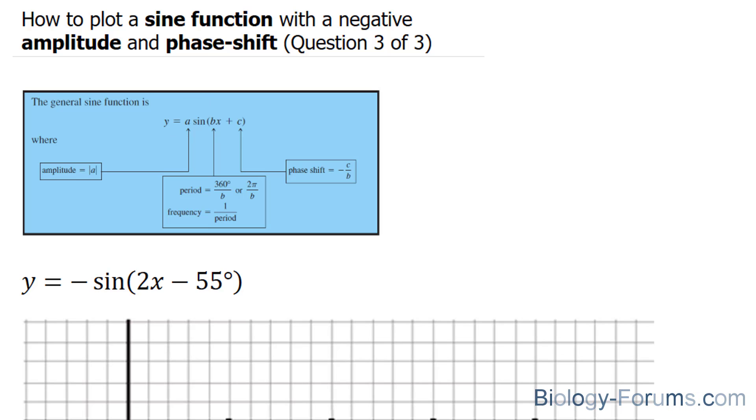So let's write that down. Our amplitude is negative 1, but of course amplitude is always absolute of the number. So in our case, it's the absolute of negative 1, which gives us an amplitude of 1.